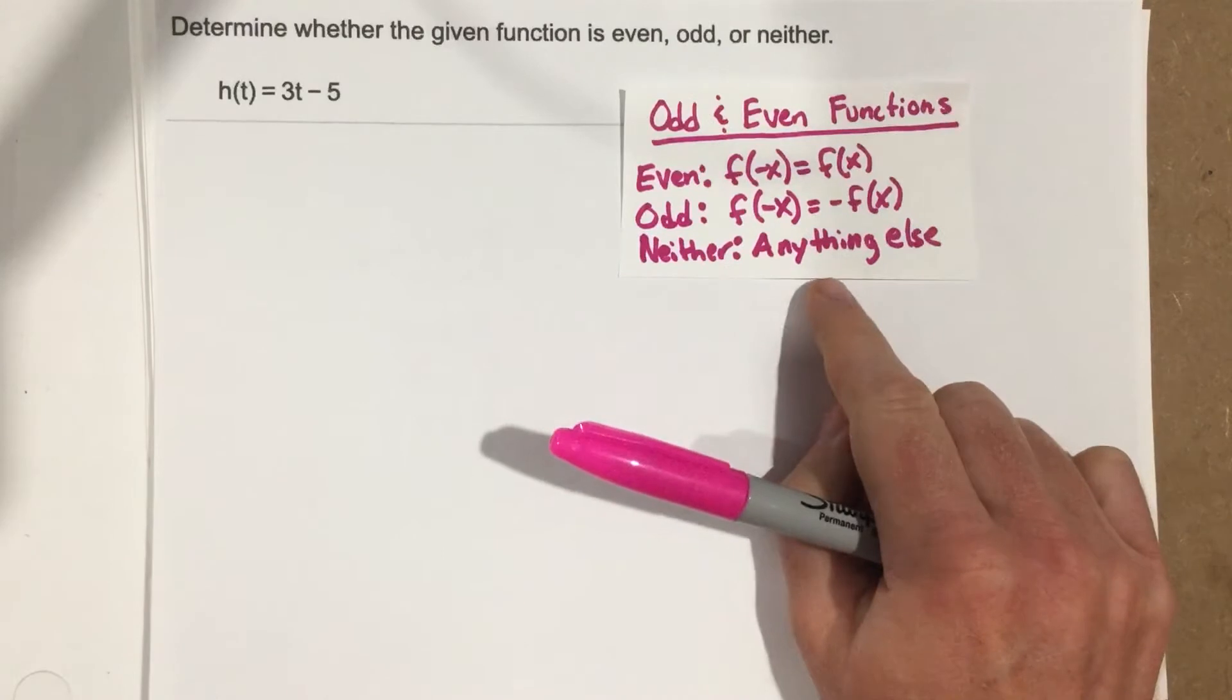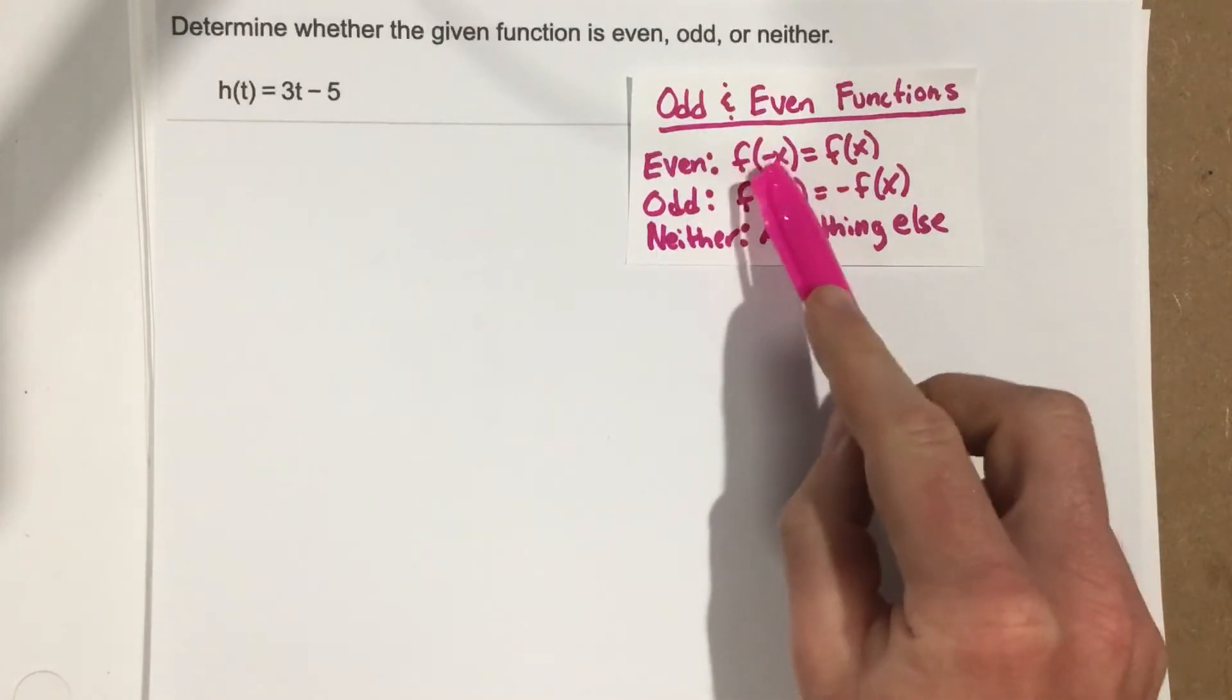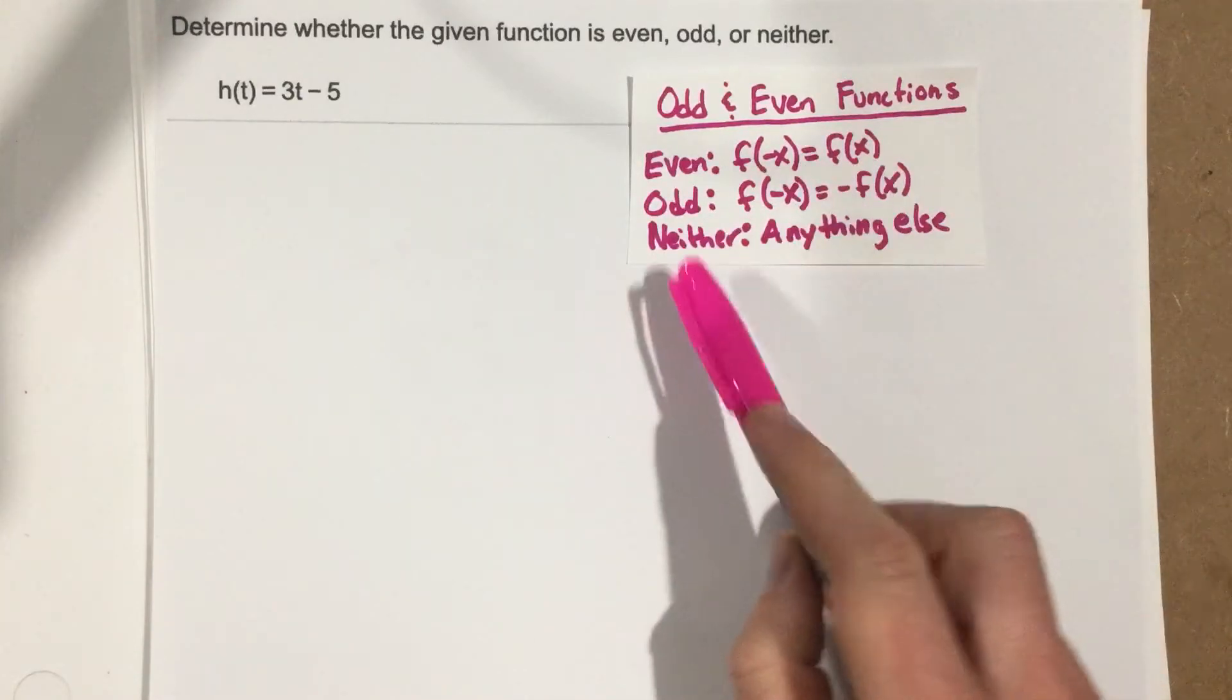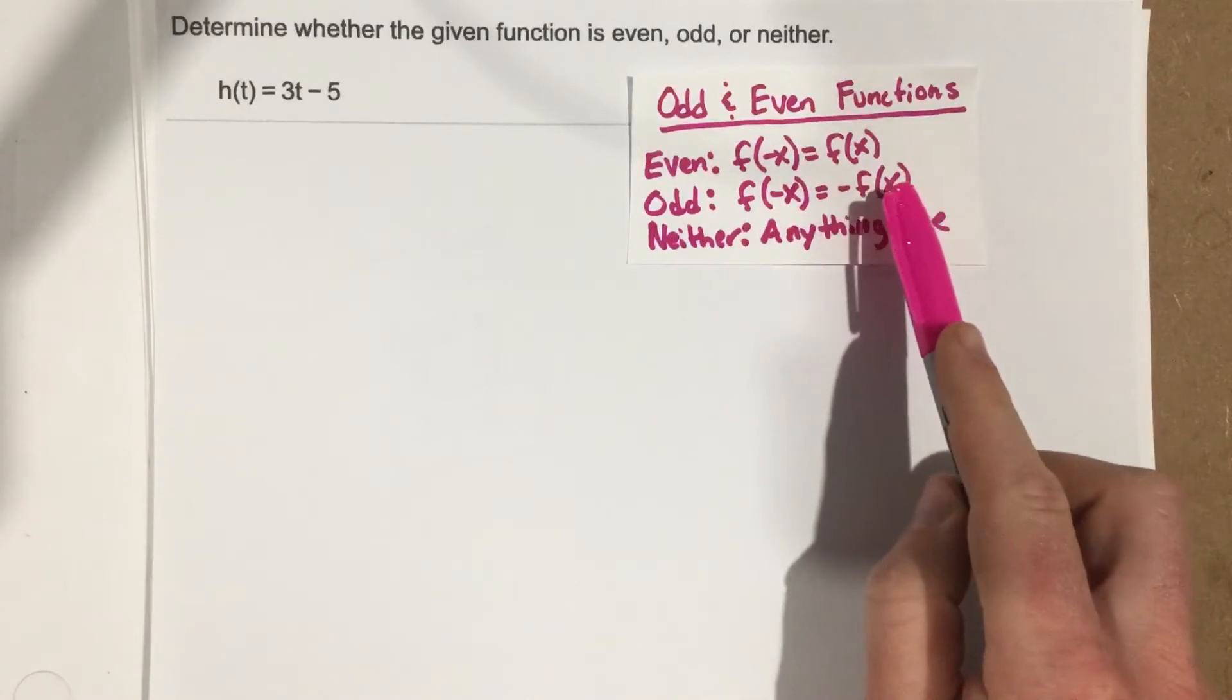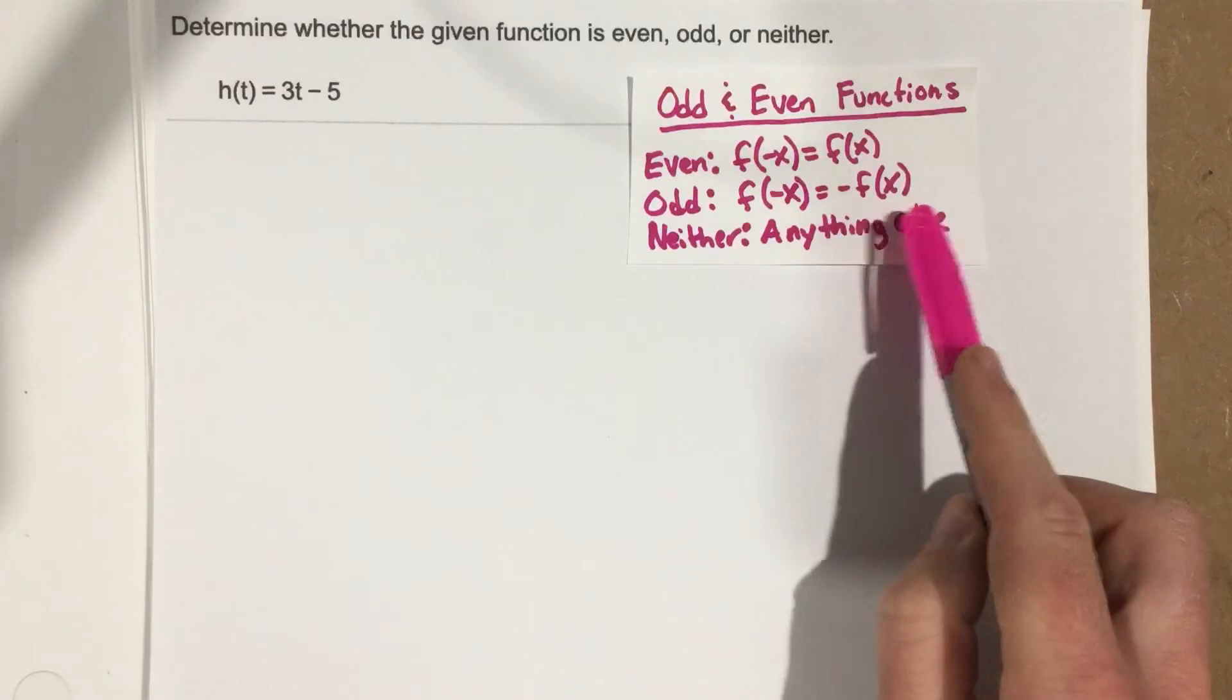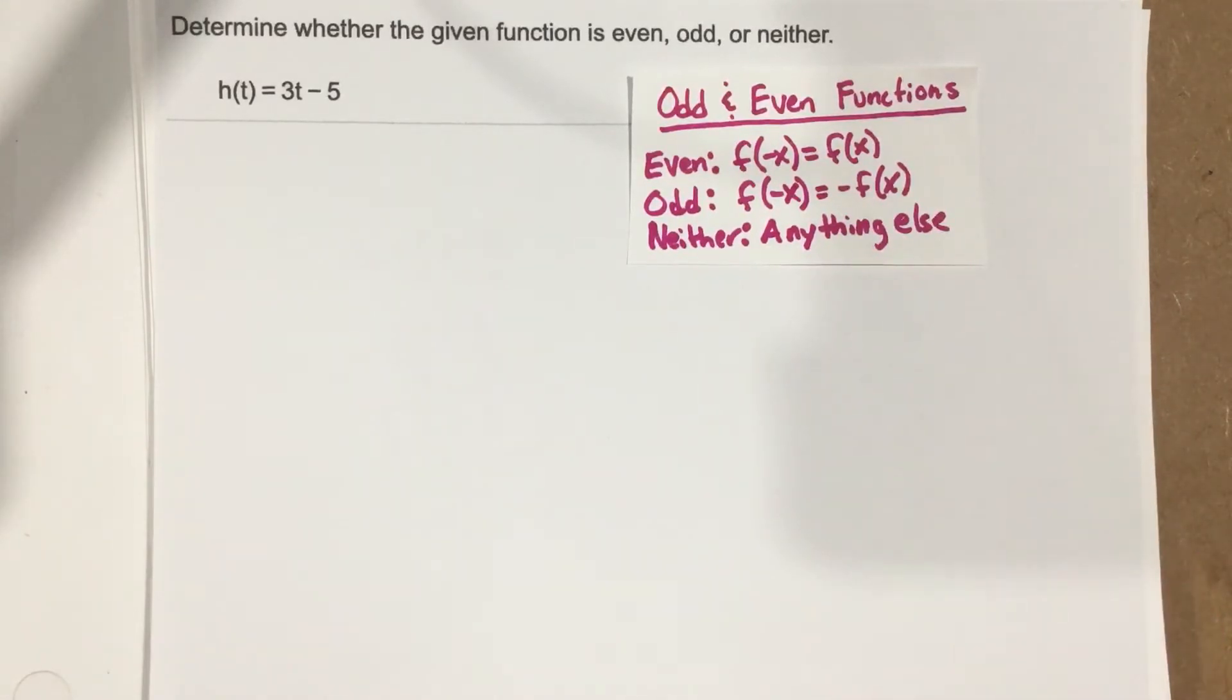Again, we go back to our definition for odd and even functions. Even function, we plug in a negative value for x, we end up with the original function. Odd function, we plug in a negative value for x, we end up with the opposite function, or the function that has changed, all the signs have changed. And then neither function would be anything else, like maybe just some of the signs change, but not all.